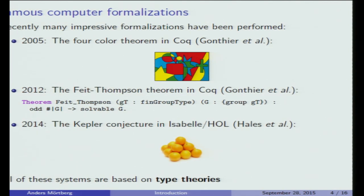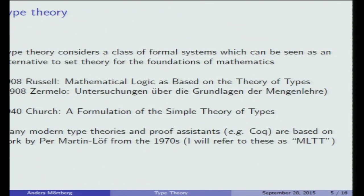All of these systems — COQ and Isabelle/HOL — are actually based not on set theory but on something called type theory. Type theory is a class of formal systems which can be seen as an alternative to set theory for the foundations of mathematics. It all started in 1908 when Bertrand Russell wrote the paper 'Mathematical Logic as Based on a Theory of Types,' constructing a formal system to overcome the paradoxes of naive set theory. Interestingly, in 1908 Zermelo also published his paper on what is now Zermelo-Fraenkel set theory.